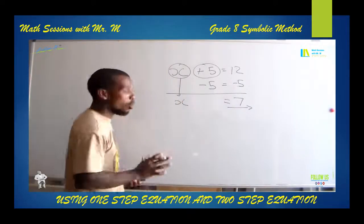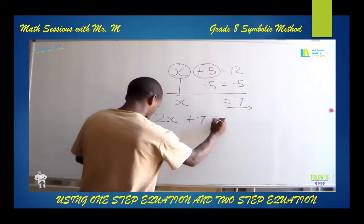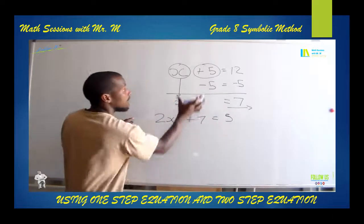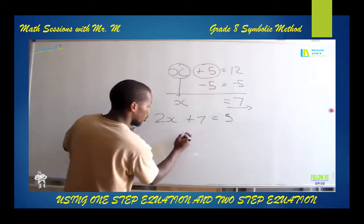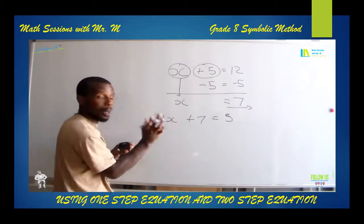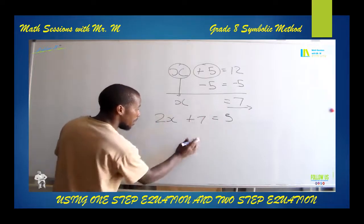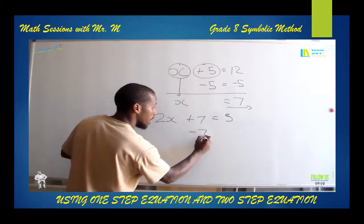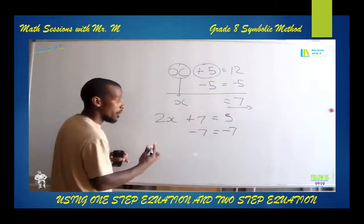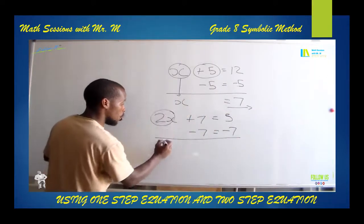Let us say you are given a two-step equation that has 2X plus 7 is equal to 5. This one is the same — anything that is attached to X is what you must take away. X has two problems: a positive 7 and a 2 that is multiplying X. So we first introduce a negative 7, and a negative 7 on the other side of the equal sign. Then you draw a line.